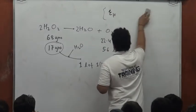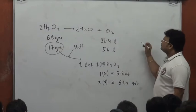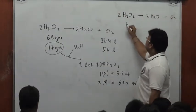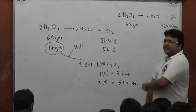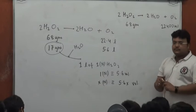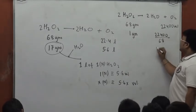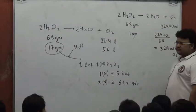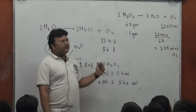Next, we relate percent strength to volume strength. Moving to milliliters: 68 grams of H₂O₂ produces 22,400 mL of oxygen at NDP. Therefore, 1 gram produces 22,400 divided by 68, which is approximately 329.14 mL of oxygen at NDP.